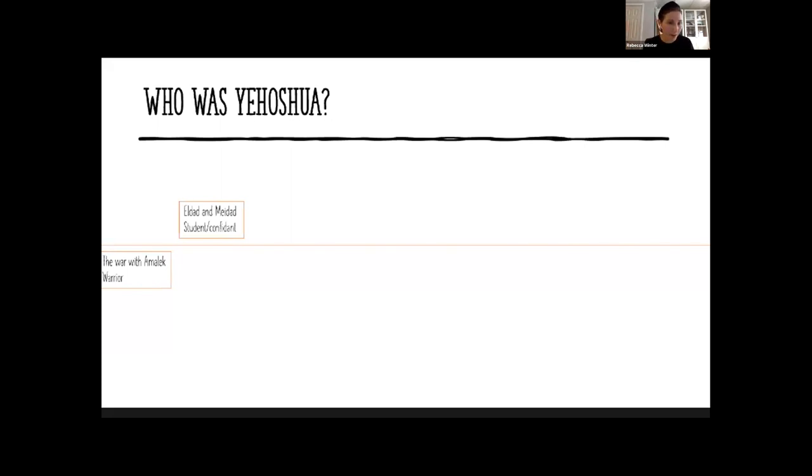Yehoshua, the first time we meet Yehoshua, is in the war with Amalek. So Yehoshua leaves Mitzrayim with everybody in Sefer Shemot, and at the very end of Parashat Beshalach we encounter Yehoshua during the war with Amalek, where Yehoshua was really the Tzav Tzavah, he was the warrior who led the war with Amalek. If those who remember, this was the war where Moshe was on a mountain, and when his arms were up, B'nei Yisrael were winning the war, and when his arms were down they were losing the war.